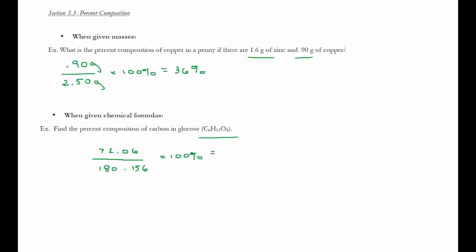And so, what I end up getting, I round to 3 sig figs. If you round to 4, that's fine. It's a little bit ambiguous for these problems, how to round. I get 40.0%. So, that's how to find percent composition.